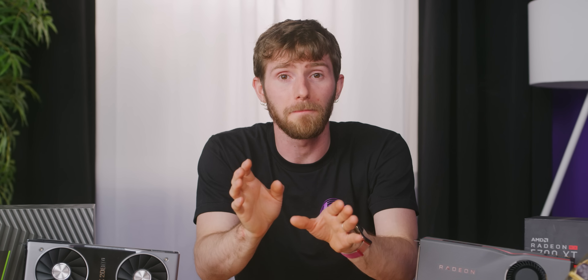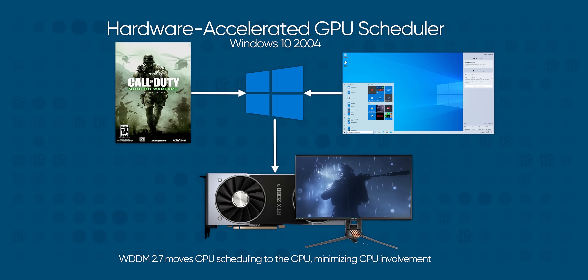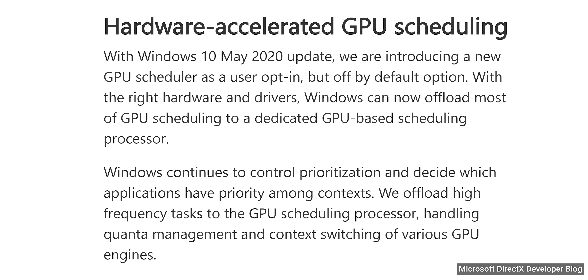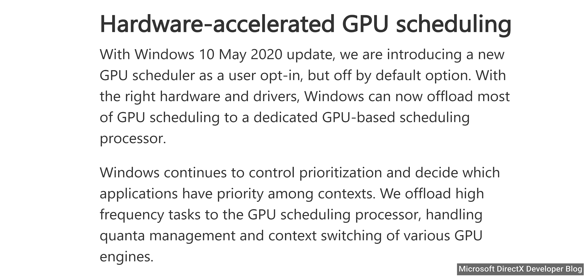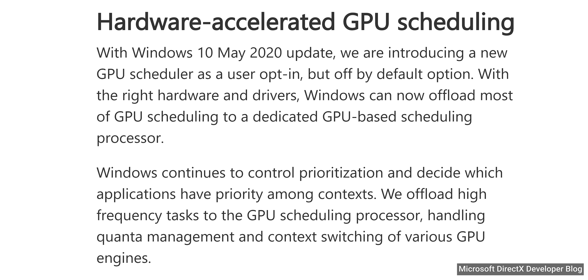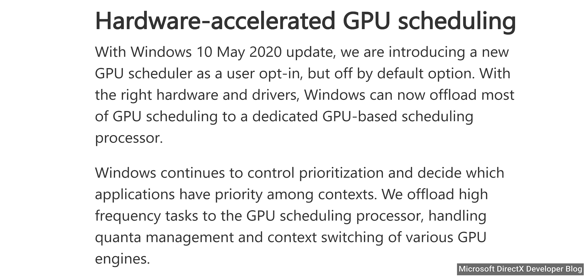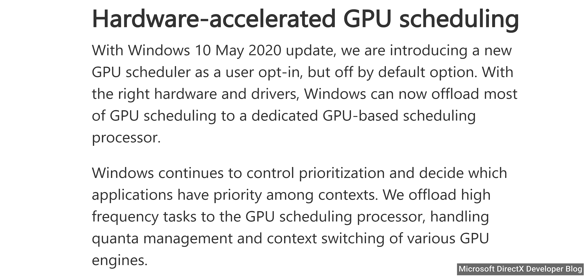Anyway, that all changes with the Windows 10 May 2020 update. Now we've got hardware accelerated GPU scheduling in Windows, which basically means that Windows tells the GPU what tasks are the highest priority on a high level. But the GPU manages its own resource allocation between those workloads to get the best of both worlds — lower latency and higher overall throughput. So then, why isn't it the default? As with all things, we need to dig in and figure that out for ourselves.